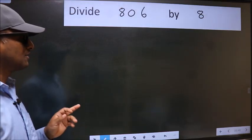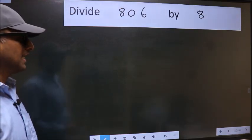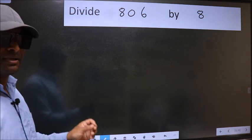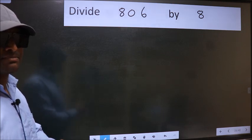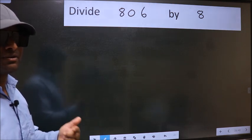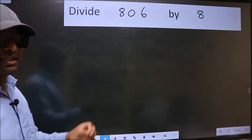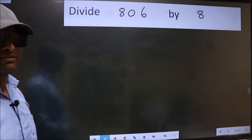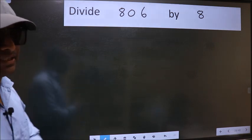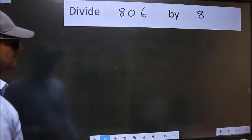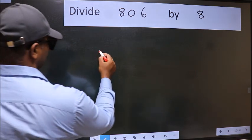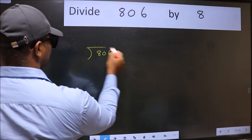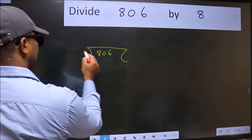Divide 806 by 8. While doing this division, many do this mistake. What is the mistake that they do? I will let you know. But before that, we should frame it in this way — 806 here, 8 here.